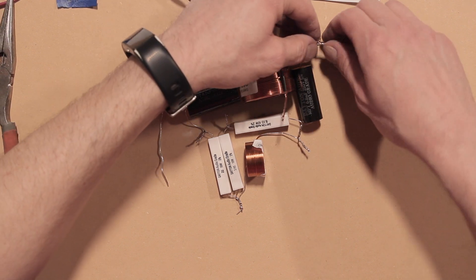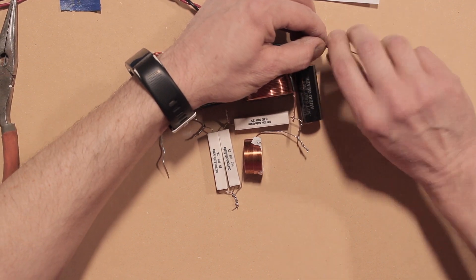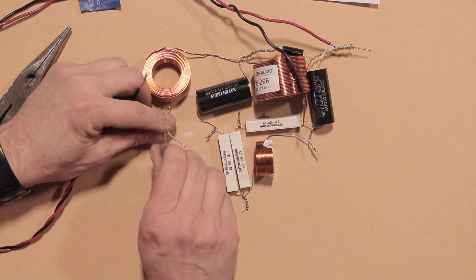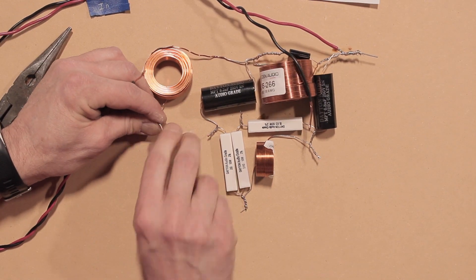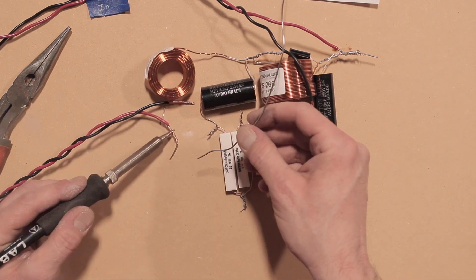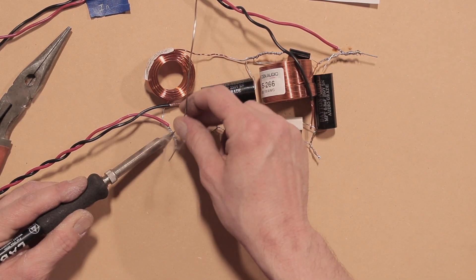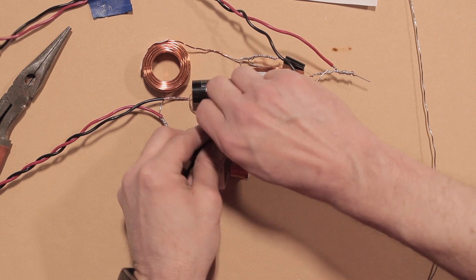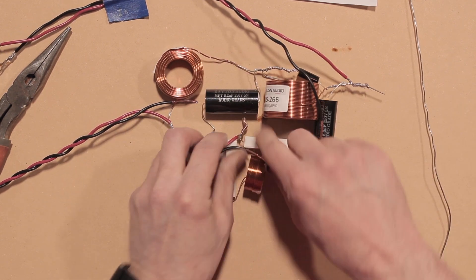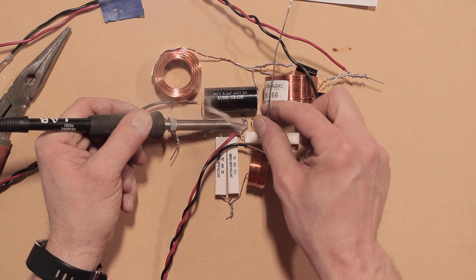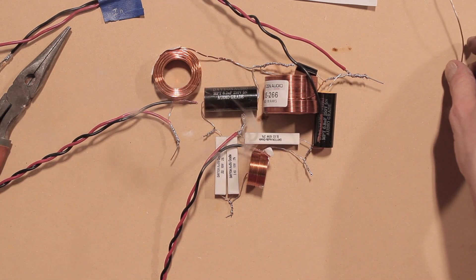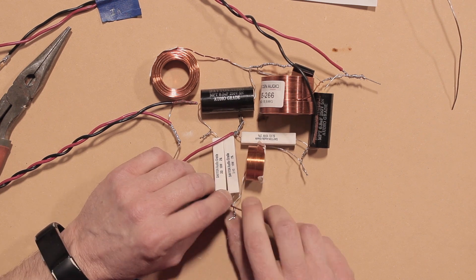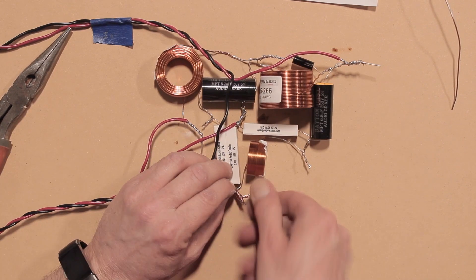The positive red input wire will be soldered to the EFD connection point. The positive red woofer wire will need to be soldered to the left side of Part G. The positive red tweeter wire will be soldered to the IJ connection point. All the negative black wires will be soldered to the KJH connection point.